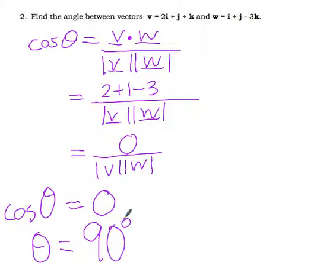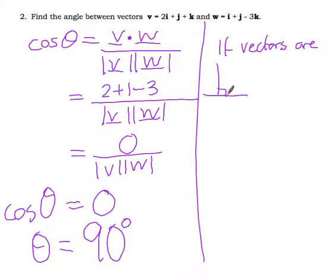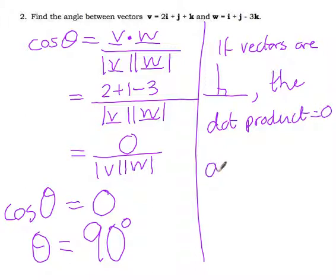Okay, this is a really important result that we're going to be using an awful lot. So if we have two vectors that are perpendicular to each other, so if vectors are perpendicular, that's the lazy way to write perpendicular, and the dot product is 0. So, a dot b is 0 when a and b are perpendicular.